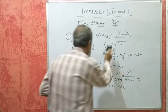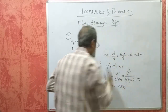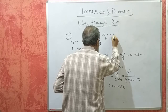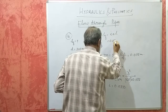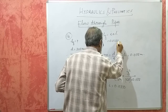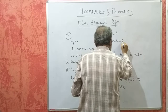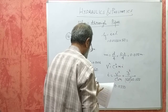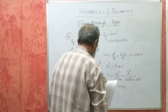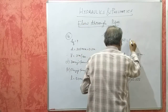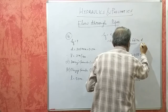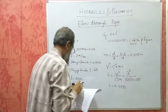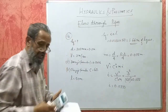Now HF = I × L = 0.0333 × 50, which gives HF = 1.66 meters of liquid. This is the head loss due to friction using Chezy's formula. That completes the problem.